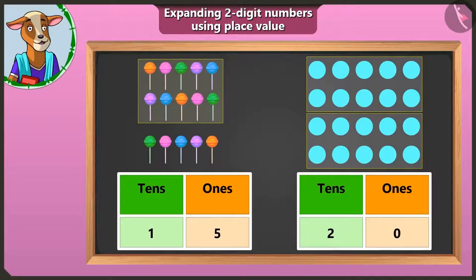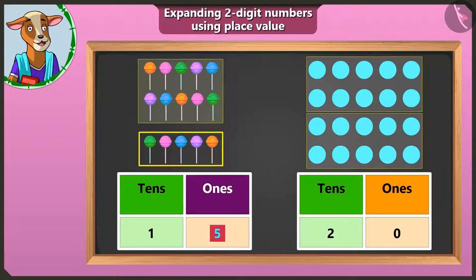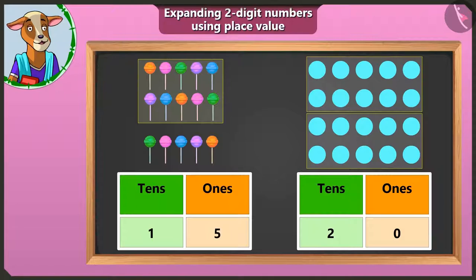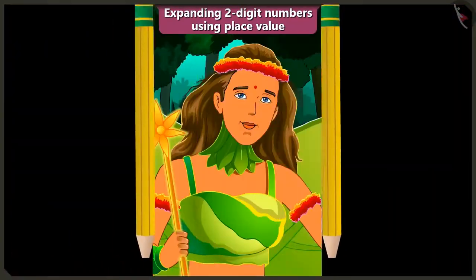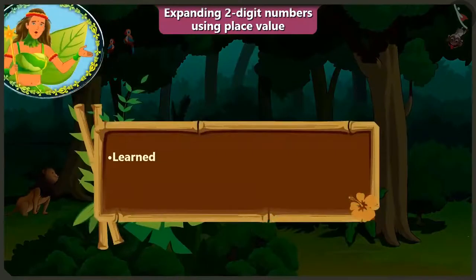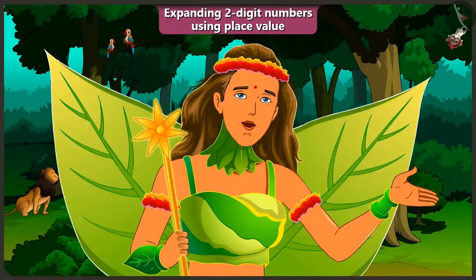Children, remember: as many groups of tens as are made, write that number in the tens box. The remaining number is written in the ones box. If no number is left, write zero in the ones box. In this video, you have learned to expand two-digit numbers using place value — writing in the boxes of tens and ones. In the next video, we will better understand this through examples.